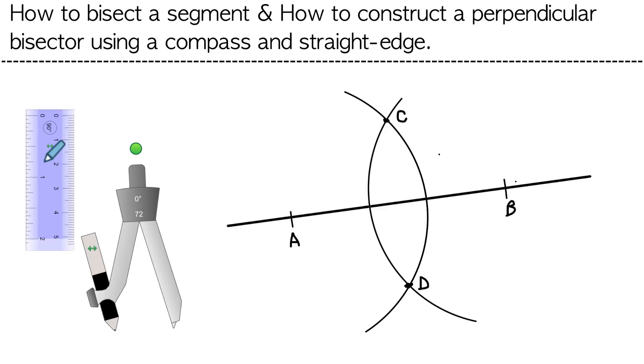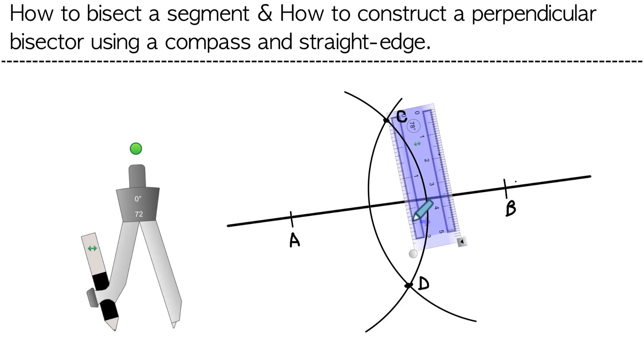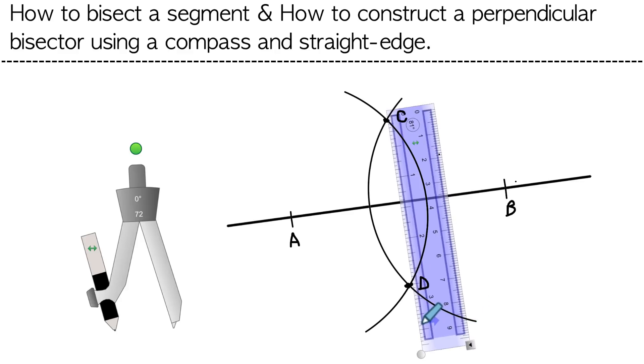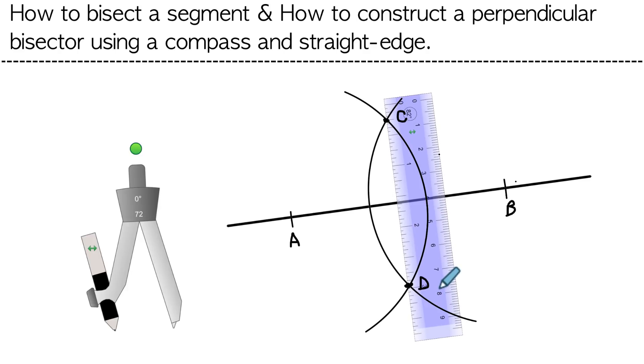All right, now we're going to use our straight edge. So we're going to bring our straight edge over here. And we're going to line up the top with one of the dots. And looks like I've got to make this a little bit longer. Magical ruler. There we are. And we're going to line up points C and D. And that should be about right there.